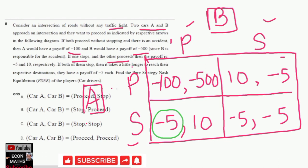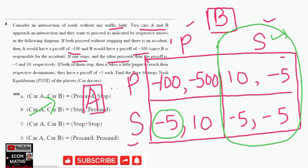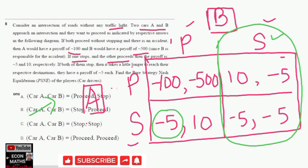Now looking at the second column — if Car B chooses to stop — Car A again has two options: proceed or stop. If Car A proceeds, its payoff is 10; if it stops, its payoff is minus 5. Since 10 is greater than minus 5, Car A would choose to proceed when Car B stops, as it gets a higher payoff from proceeding.